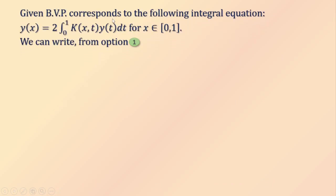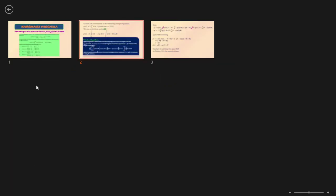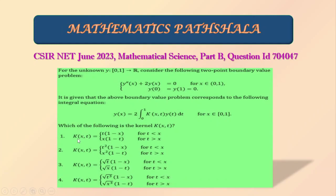The given BVP corresponds to the following integral equation: y(x) equals 2 times the integration over 0 to 1 of K(x,t)·y(t) dt, for x belonging to the closed interval [0,1]. From option 1, K(x,t) equals t·(1−x) for t less than x, and x·(1−t) when t greater than x.